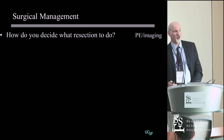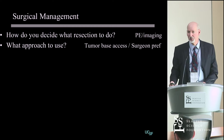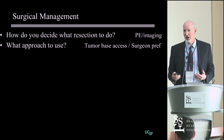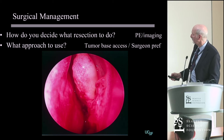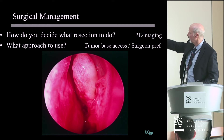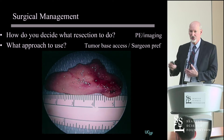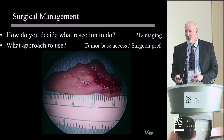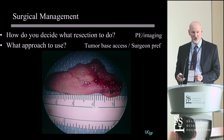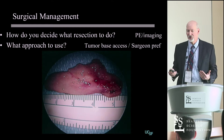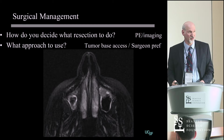How do you decide what to do? Physical examination and imaging are obviously very important. What approach to use depends on the tumor base — where that base is — and surgeon preference. The approach really has to be tailored to where the tumor is arising from. I think that's been the greatest advancement over the last 20 years: we really tailor our approaches to the individual characteristics of the tumor.